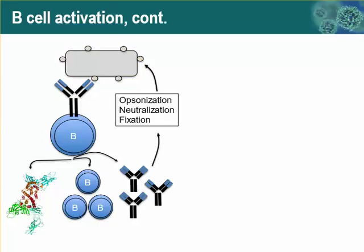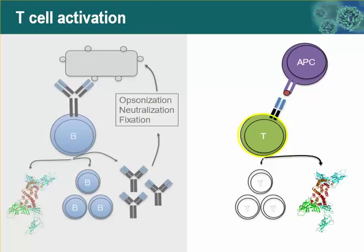Compare this to T cell activation. Here we have a T cell receptor, again with variable domains that confer specificity. However, this T cell receptor, when it binds the cognate antigen, has to bind to that antigen in the presence and context of MHC. If the T cell receptor is properly engaged, then the T cell can have downstream effects much like the B cell — it can proliferate, it can produce cytokines, and cause cytotoxicity against the target positive agent.